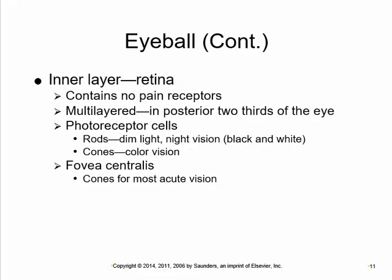The retina is the neural part where the photoreceptor cells — rods and cones — are located. It's multilayered and sits at the back of the eyeball. In the center of the retina is the fovea centralis, where really acute vision happens. The fovea is packed with cones for acute vision — this is whatever you're looking at directly. As you read a slide or watch a video, you're using the fovea to distinguish the contours of letters.